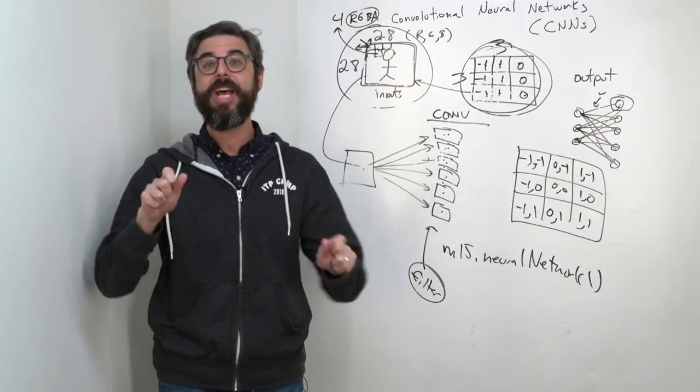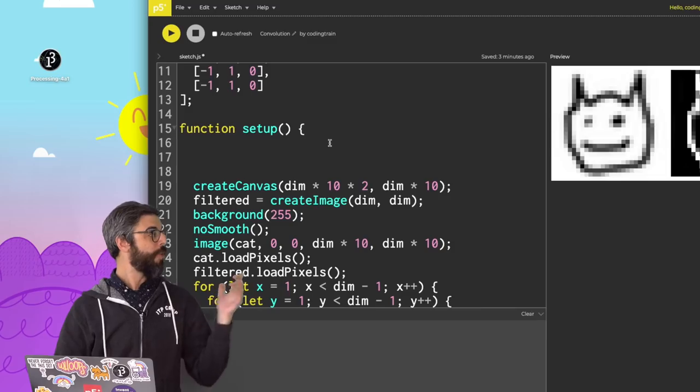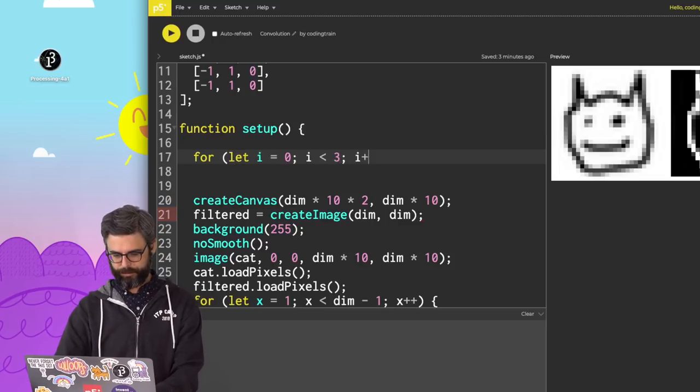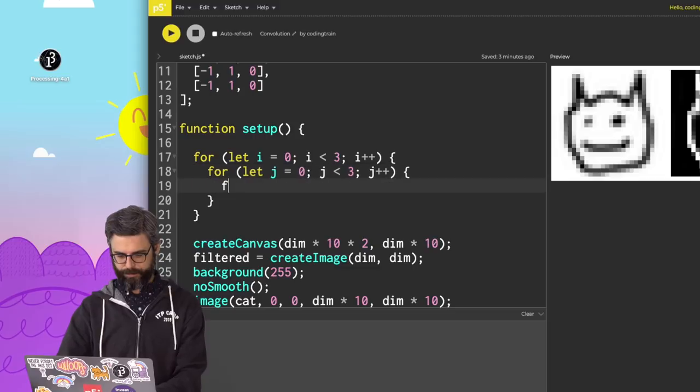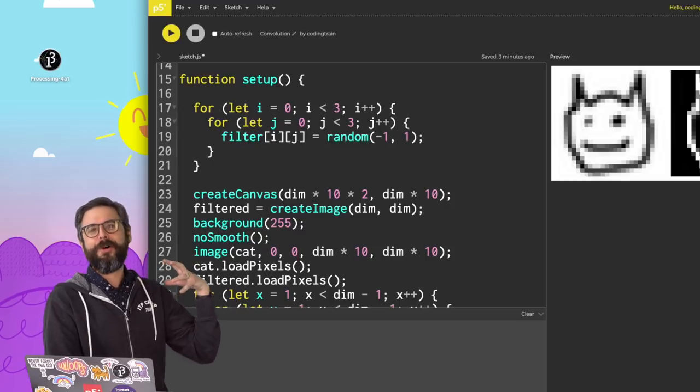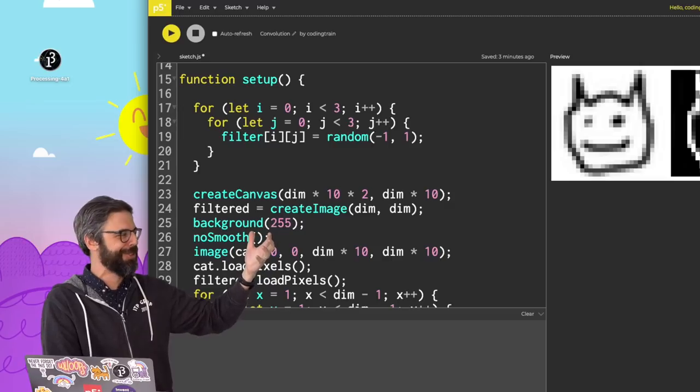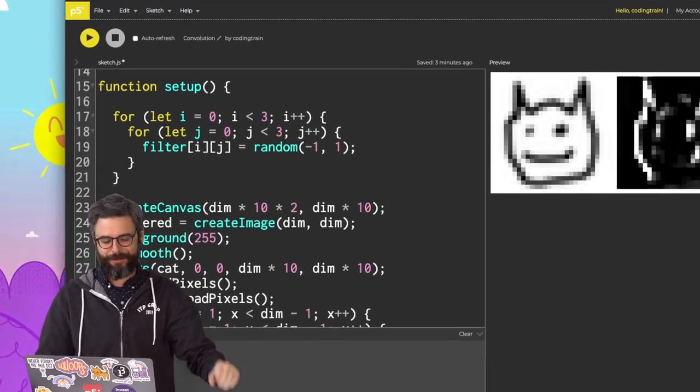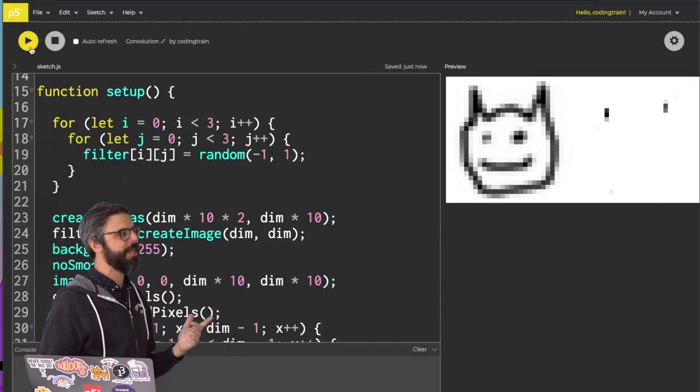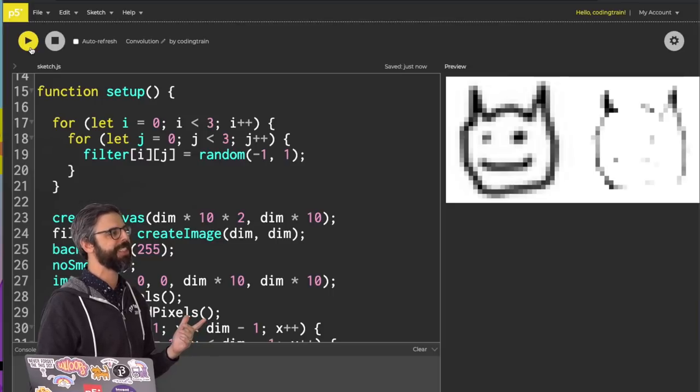So just to keep my example simulating the neural network process a bit more, let's just, every time I run it, give it a random filter. Because that's what the layer would begin with. Just like a neural network begins with random weights and learns the right weights, the filters begin with random values and it learns optimal values. So right here in setup, I'll write a nested loop. And give it a random value between negative and one. In truth, there are other mechanisms and strategies for starting the initial weights of a convolutional neural network. But picking random numbers will work for us right now just to see. So every time I run it, you can see we get a different resulting image that is filtering the image in a different way.